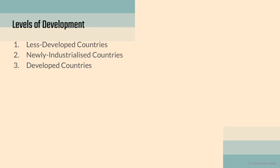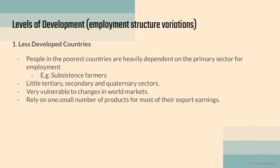Moving on to levels of development: in today's economy we have less developed countries, developed countries, and a newer category called Newly Industrialized Countries, or NICs — emerging economies that sit in between. Singapore is an example: it has moved from a less developed country to quite a developed nation, but is not yet fully developed like America. Singapore is therefore considered a Newly Industrialized Economy or Newly Industrialized Country.